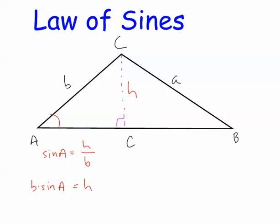I'm going to do the same thing for the right side, this time with angle B. If I know angle B, sine of B will equal H, the opposite side, over the hypotenuse, which in this case is A. Multiplying both sides by A,